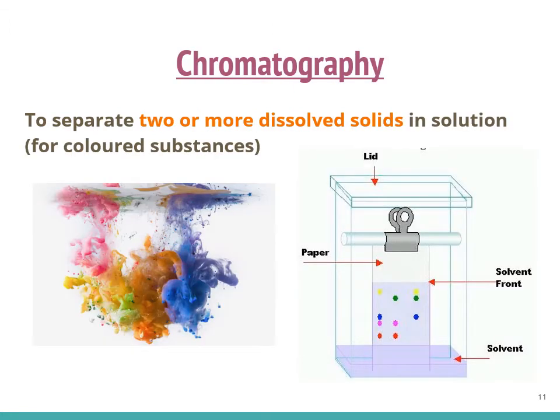The second technique is called chromatography. Paper chromatography is used to separate two or more dissolved solids in solution for colored substances. For instance, we can use paper chromatography to separate the different substances in ink or in a cordial drink.